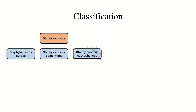Let's talk about their classification. Staphylococcus is further classified into three different species: the first is staph aureus, the second is staph epidermidis, and the third is staph saprophyticus. There are detailed videos on all three staph species — find the links in the description.